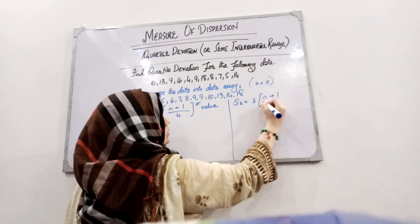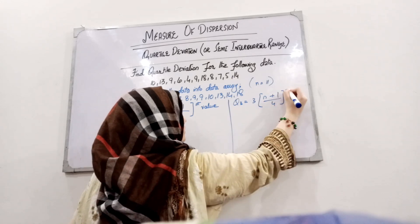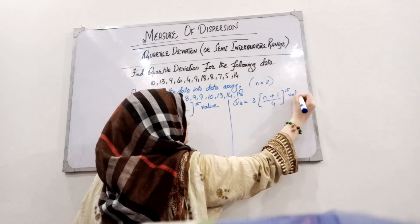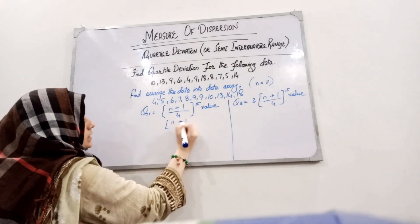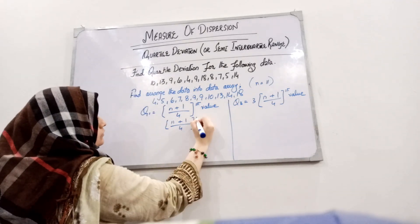Q3 is 3 times (n+1) divided by 4. So 3 times (11+1) divided by 4...